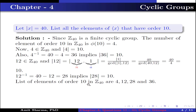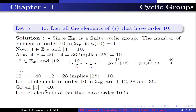The list of elements of order 10 in Z₄₀ are 4, 12, 28, and 36. Given the order of X is 40, the list of elements of the group generated by X that have order 10 is X⁴, X¹², X²⁸, and X³⁶.